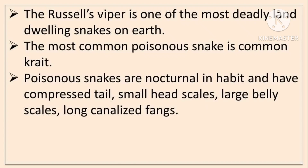The difference between poisonous and non-poisonous snakes: Poisonous snakes are nocturnal in habit and have a compressed tail, small head scales, large belly scales, and long canalized fangs. An exception is Cobra, which has large head scales. Large belly scales cover the entire breadth of the belly, while in non-poisonous snakes they only cover part of it.